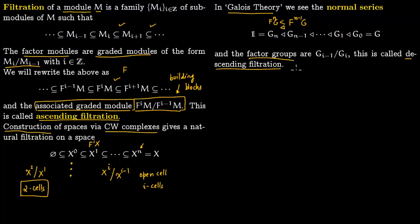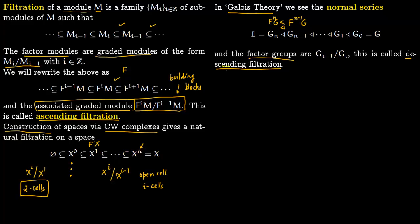Another filtration could be a multiplicative filtration of a ring R. This is again a descending filtration. You put R as I_0, and then you have a sequence of ideals like this where the product of two ideals I_m times I_n is contained within I_{m+n}.